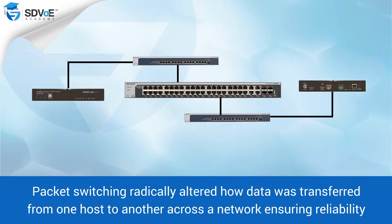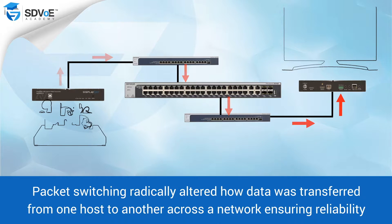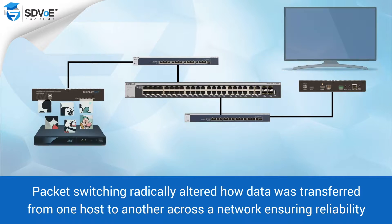This method ensured reliability across the network as a whole. Rather than send a continuous message over a circuit, which was hopefully permanently connected, packet switching broke the message down into smaller packets of data.